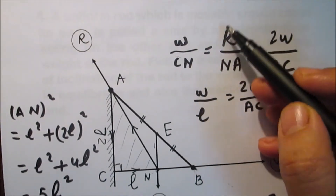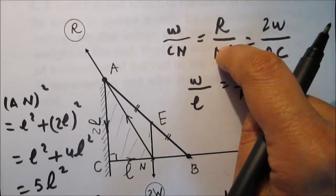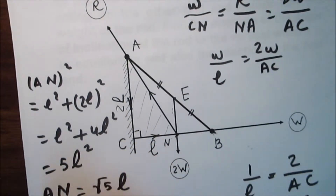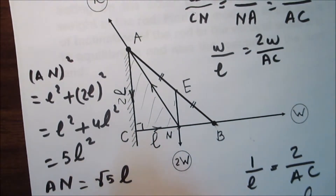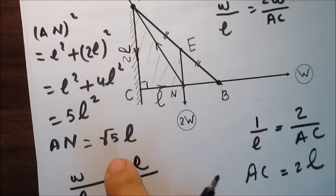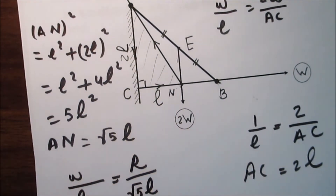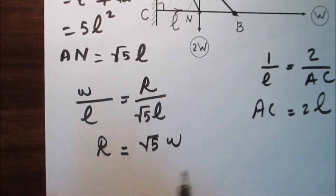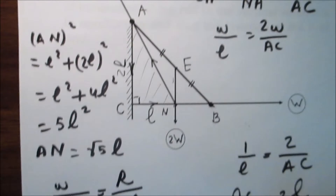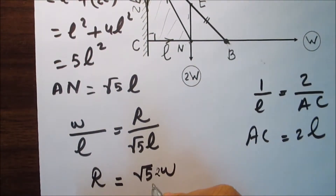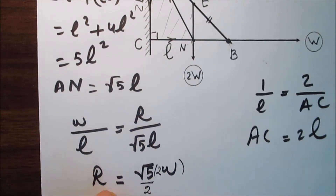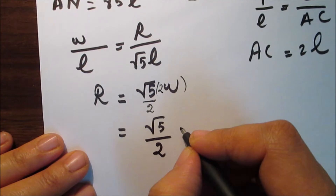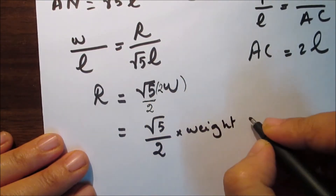Now we can find the reaction at the first end of the rod. Substituting: w over CN (which is l) equals R over AN (which is √5 · l). So w over l equals R over √5 · l. Cross-multiplying gives R equals √5 · w. To express R in terms of the weight of the rod (2w), multiply numerator and denominator by 2 to get R equals (√5 / 2) times the weight of the rod.